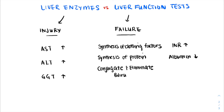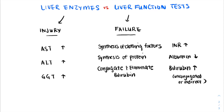Remember, albumin is probably our least specific test. The liver is also responsible for the conjugation and elimination of bilirubin, and so we often look for an elevated total bilirubin — more specifically, an elevated unconjugated or indirect bilirubin. Finally, the liver is responsible for gluconeogenesis and is a source of glycogen. More so seen in later stages of liver failure, hypoglycemia may also be seen.